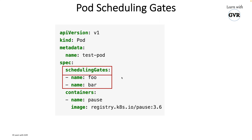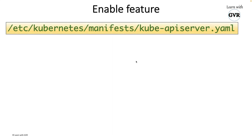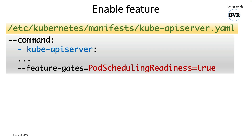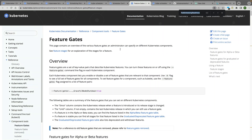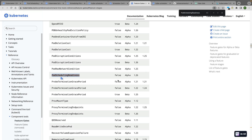For the demo, since this is an alpha feature, we need to enable it. This is a two-step process. First, in the kube-apiserver YAML file on the master node at the appropriate path, add the flag: --feature-gates=PodSchedulingReadiness=true. Alpha and beta features are enabled this way. By default, this alpha feature is false and must be enabled manually.